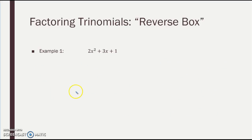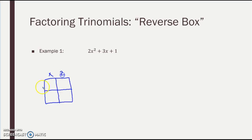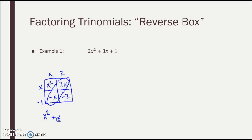The other way is Reverse Box. Remember whenever we multiplied using a 2 by 2 box, you'd put your terms — like X and 2, X and negative 1 — and just multiply to get X squared, 2X, negative X, negative 2. Combine your like terms: first term comes down, positive X, and then minus 2. That's what we do when multiplying with the box method. Your first term is always in the first box, your last term is always in the last box, and the two diagonals combine to get the middle term.